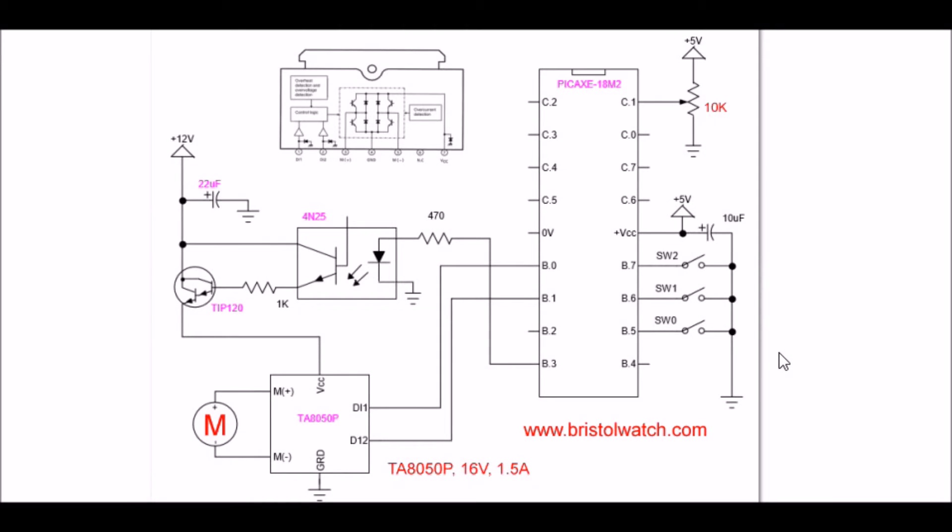All right, here's your basic schematic to the circuit in the video. Down here is my TA8050 controller, H-Bridge controller. There's your motor connection. D1 and D2 go right back to B0, B1, B3, which is my pulse width modulation out,